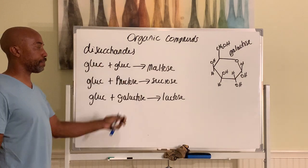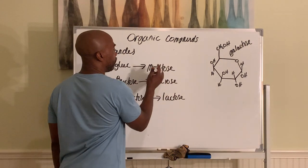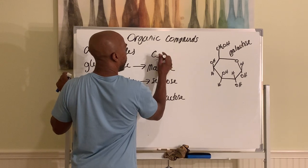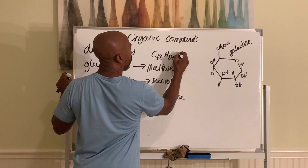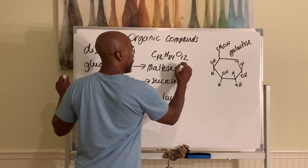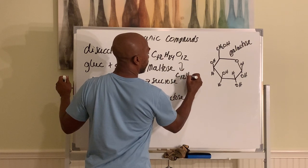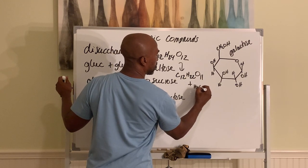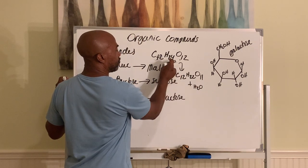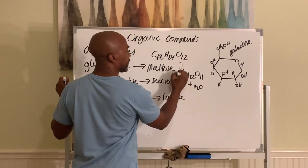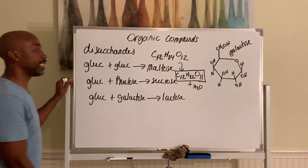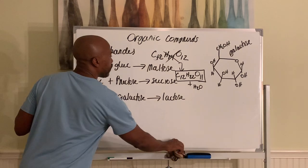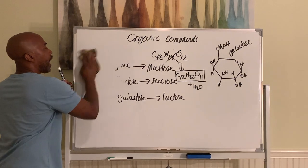Know those three disaccharides and what combines to make them. The formula for disaccharides: in theory combining two hexoses gives C₁₂H₂₄O₁₂, but you must remove a water molecule during bonding — two hydrogens and one oxygen — so the real formula is C₁₂H₂₂O₁₁. That is the correct formula for your disaccharides.